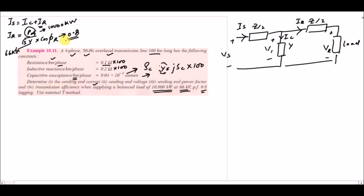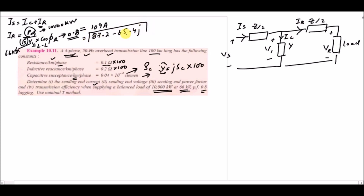Note that 66 kV is the line-to-line voltage because we use √3 in the formula for the 3-phase line. Using line-to-neutral voltage would require multiplying by 3 instead. Solving gives a receiving end current magnitude of 109 A, written in polar/complex form as 87.2 − j65.4 A.